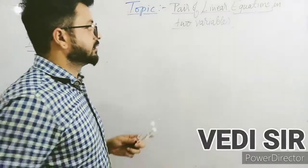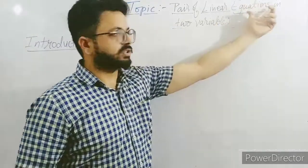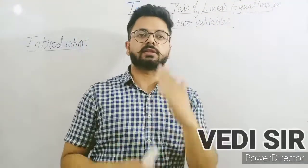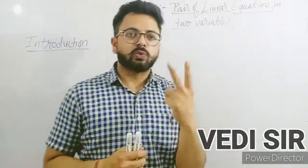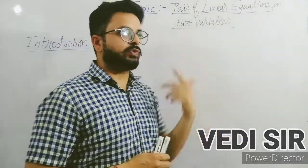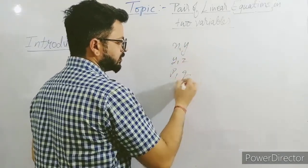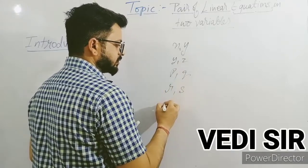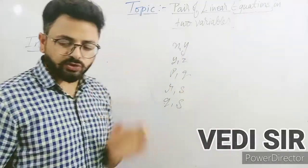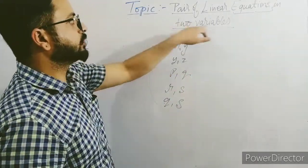The second part: 'pair.' Pair of linear equations means we will deal in this chapter with two linear equations. And 'in two variables' means we can use x and y, we can use y and z, p and q, r and s — it's our choice. But according to the question, we have to solve using two variables.